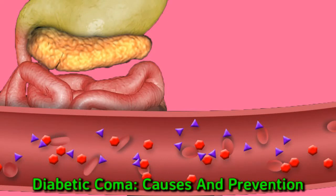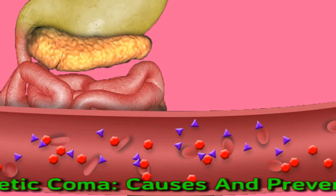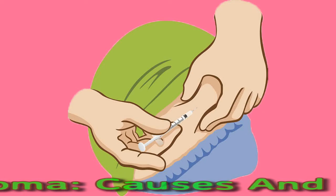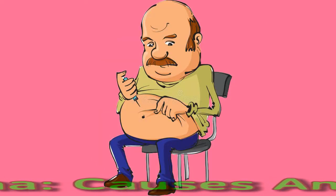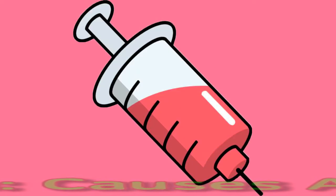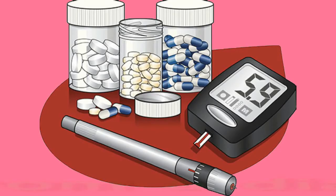People with diabetes have a high risk of these conditions. The severe symptoms of uncontrolled blood sugar that can come before a diabetic coma include vomiting, difficulty breathing, confusion, weakness, and dizziness.